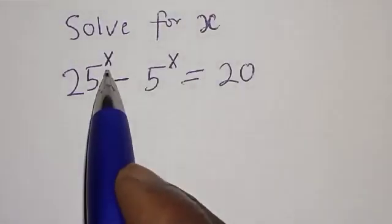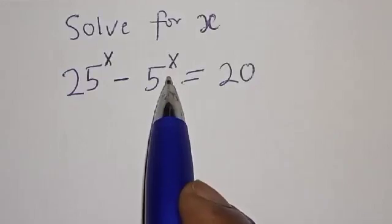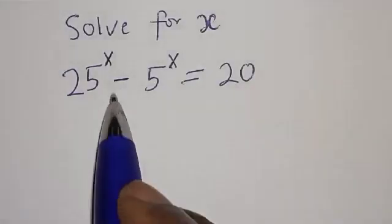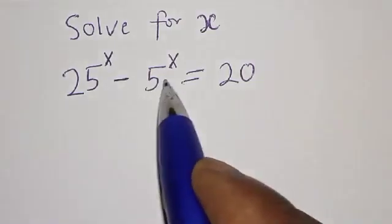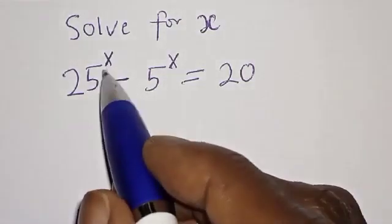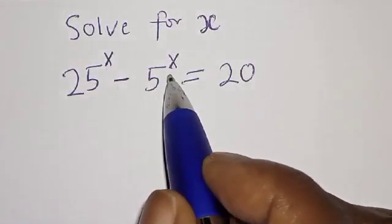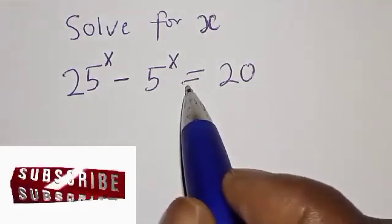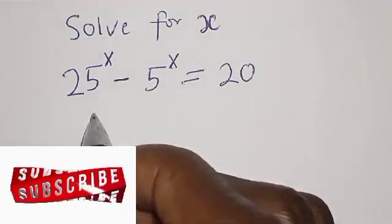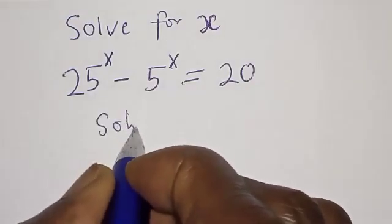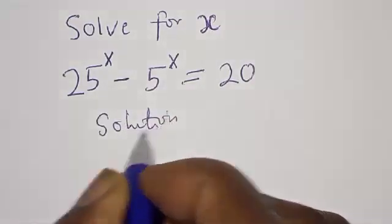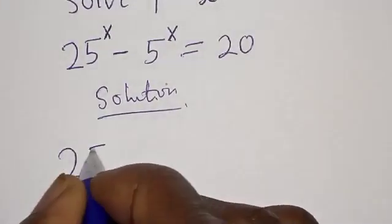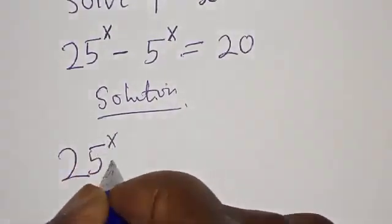Solve for x: 25 raised to power x minus 5 raised to power x is equal to 20. Hi everyone, welcome to my class. In this class we want to find the value of x from this given equation. Before we proceed, please don't forget to like, share, comment and subscribe. Thank you.